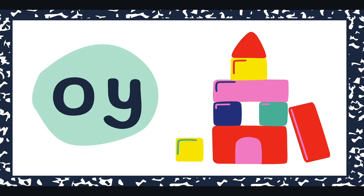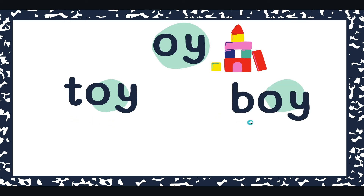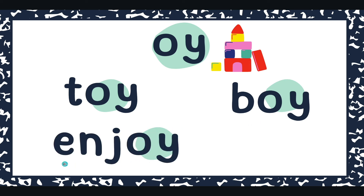OY also says "oi" — like in the word "toy." So if we see OI or OY, we get to say "oi." Let's go ahead and tap on OY and say "oi." Okay, let's read some OY words. We have my favorite: t-oy, toy. B-oy, boy. Awesome. This is a biggie: n-j-oy, enjoy. Awesome.